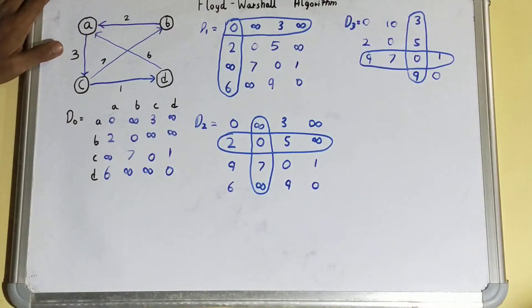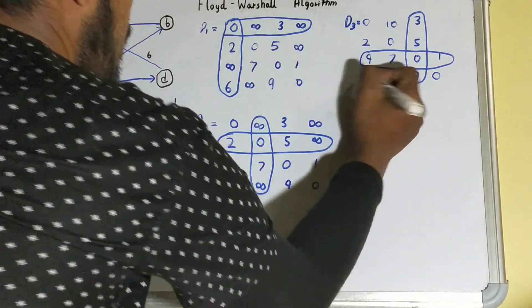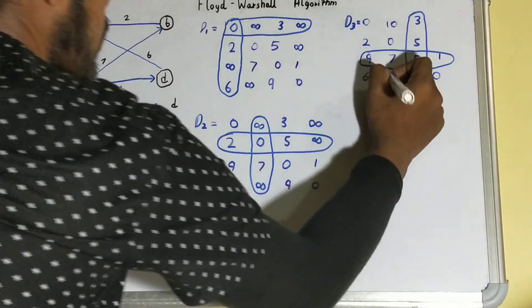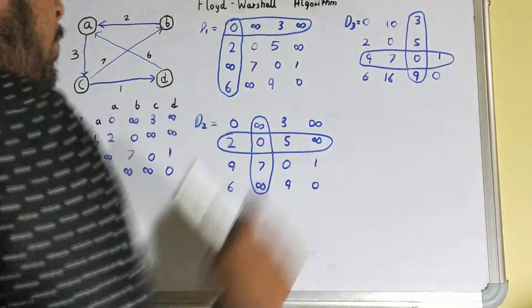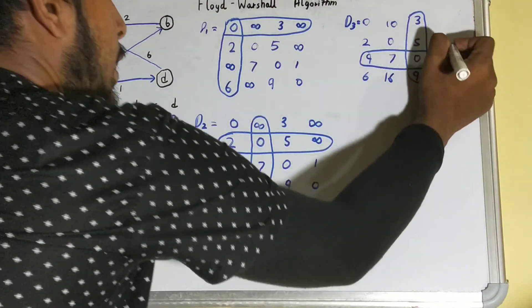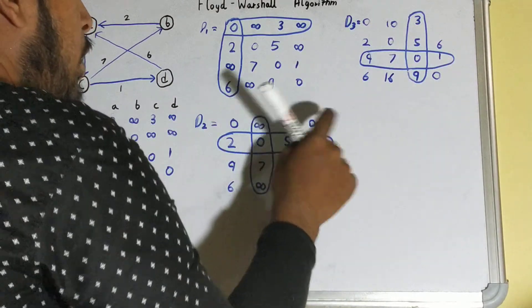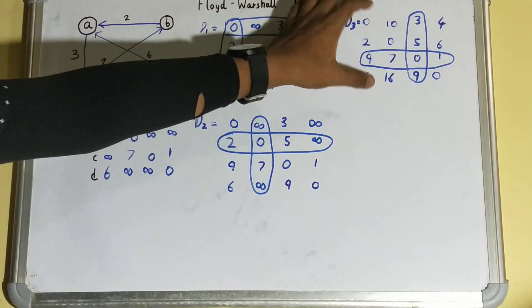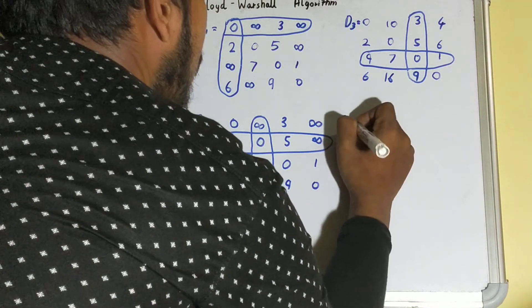Continuing D3: nine plus nine is eighteen, earlier value is six so we keep six. Seven plus nine is sixteen, earlier value is infinity so we keep sixteen. One plus five is six, earlier value is infinity so we keep six. Three plus one is four, earlier value is infinity so we keep four. All infinity values are now gone, but we still go on to find D4 as a general rule — always go till the last matrix based on the number of vertices.